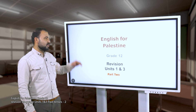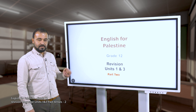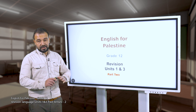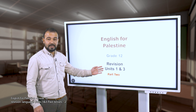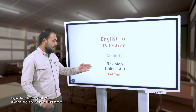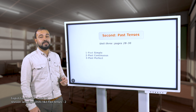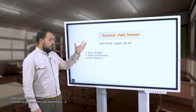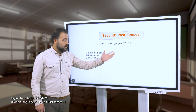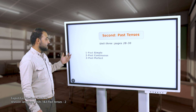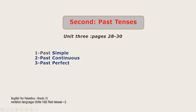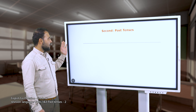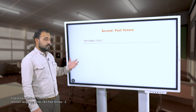Hello dear students and welcome back to English for Palestine Grade 12, revision units 1 and 3. We completed revising unit 1, which was about the present tenses. In part 2 we will continue with the past tenses - unit 3, pages 28 to 30. There are three past tenses: number one, past simple; number two, past continuous; and number three, the past perfect.